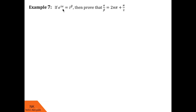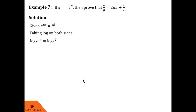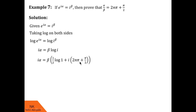In example 7, given that e raised to i alpha equals i raised to beta, we have to prove alpha/beta equals 2n pi plus pi/2. Taking log on both sides, log of e raised to i alpha equals log of i raised to beta. Since log is with base e, log of e raised to i alpha is just i alpha. On the other side, using log property, log i raised to beta equals beta log i. Using the general value, log i can be written as (1/2)log 1 plus i(2n pi + pi/2). Since log 1 is 0, RHS becomes beta into i into (2n pi + pi/2).